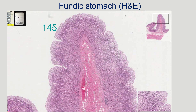Here we want to differentiate between these stains using the fundic stomach as an example in an H&E stain. The more pink areas indicate protein-rich regions, while the more purple areas indicate higher nucleic acid concentration — so you have more nuclei and therefore more cells in those regions, and more proteins in the pink areas.